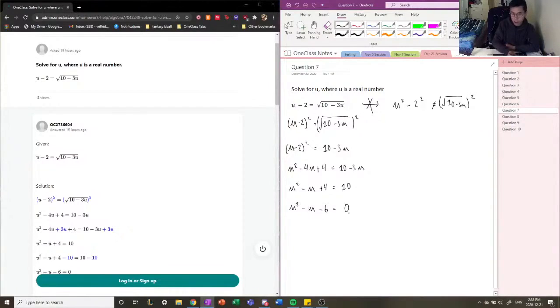Let's factor this. Let's find the factors for our coefficient of our leading term, which is one, so it's going to be one times one. Let's find the factors for our coefficient of our constant, which is negative six. So we're going to do negative three and two. If we cross multiply this together, we get negative three plus two, and that equals to the coefficient of our middle term, which is negative one. Now we're going to use these as our factors, so we have u minus three times u plus two equal to zero.